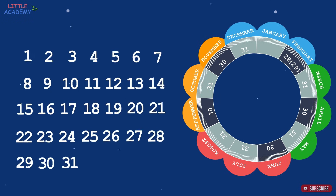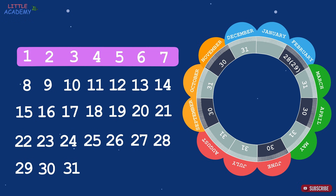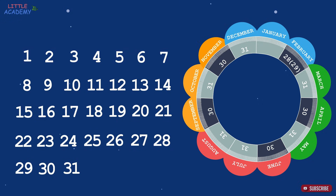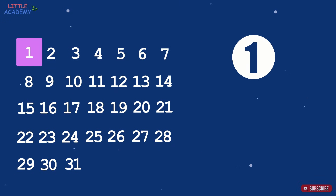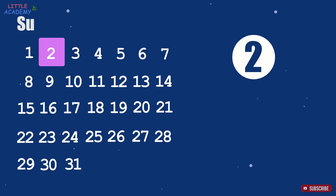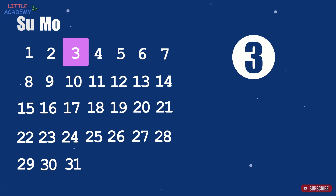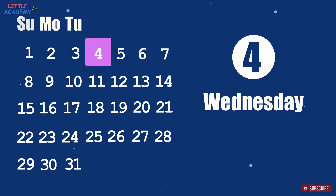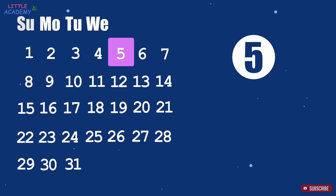In addition to that, days are combined into weeks. Each week has seven days. The first day of the week is Sunday, the second day is Monday, the third day is Tuesday, the fourth day is Wednesday, the fifth day is Thursday, the sixth day is Friday.